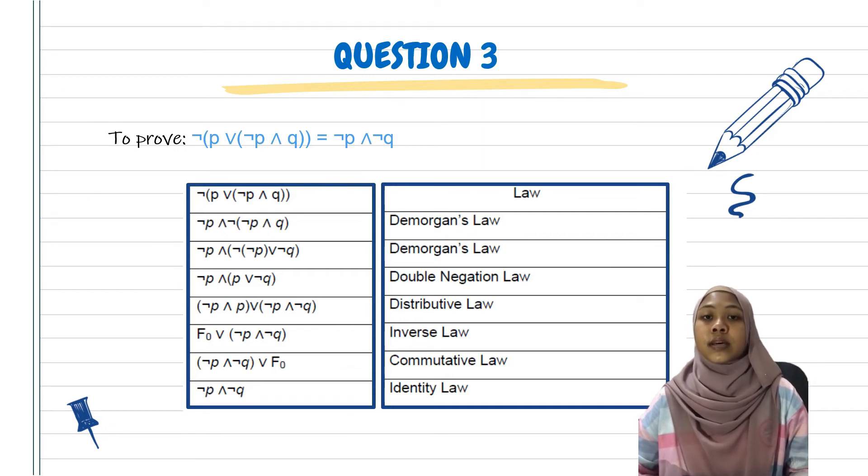Because there is NOT NOT P there, we can use Double Negation Law and we will get P. Because we have three different sets and the symbol is also different, we can use Distributive Law. So we get (NOT P AND P) OR (NOT P AND NOT Q). NOT P AND P will be F using Inverse Law.